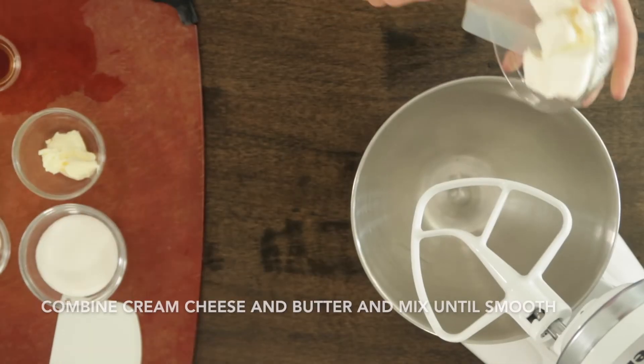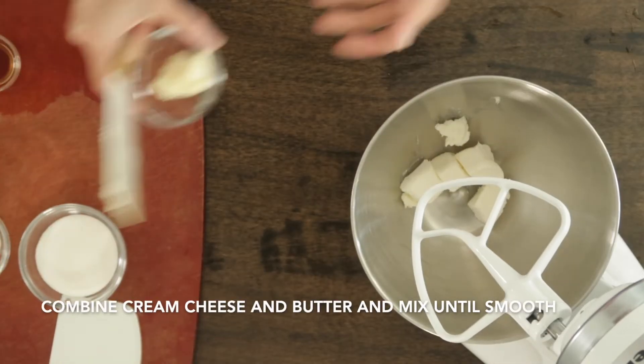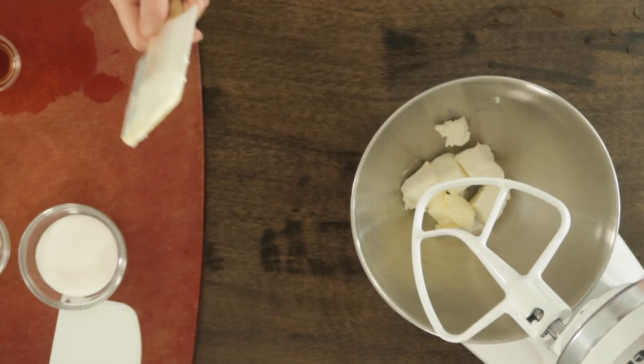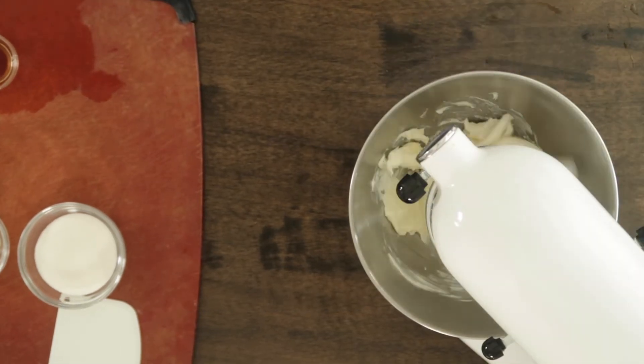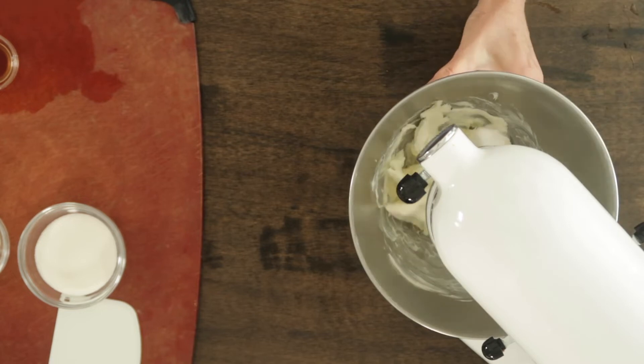To make the cream cheese filling, we're going to combine the cream cheese and butter in the mixer and we're going to mix till they're smooth. It's really helpful for the cream cheese and butter to be at room temperature. Let them sit out a while.